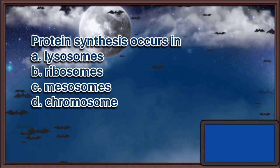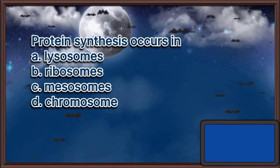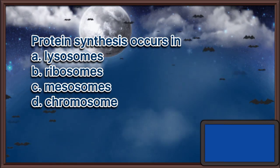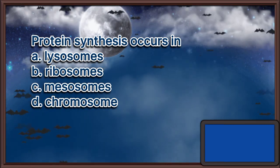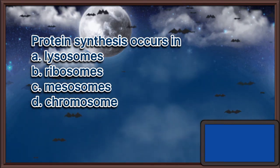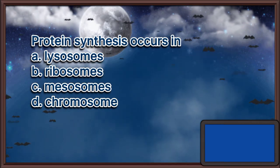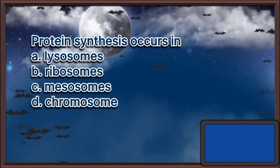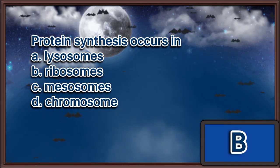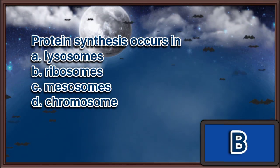Protein synthesis occurs in. A. Lysosomes. B. Ribosomes. C. Mesosomes. D. Chromosomes. The answer is letter B.